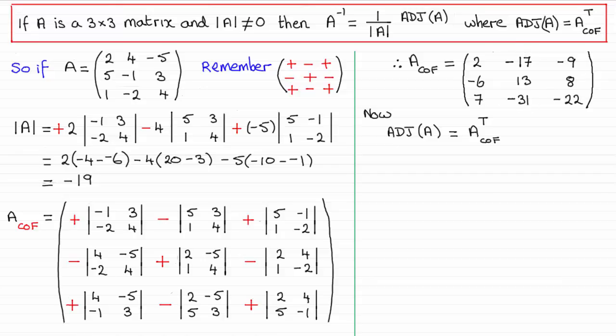So, you should get this result. You can see the 2 minus 17 minus 9 becomes the first row. This middle row here becomes the second column. And the bottom row here becomes the third column.